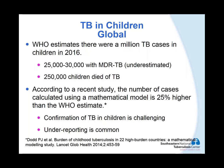Looking specifically at children, the WHO estimates that there were one million TB cases in children in 2016. Of these children, 20 to 30 thousand were MDR-TB cases, and 250 thousand children died of TB. Everybody agrees that this is probably an underestimation. According to a recent study using a mathematical model, the real number is probably 25 percent higher than what the WHO estimates. This is because WHO estimates are based on reported pediatric cases, and confirmation of TB cases in children is very difficult and challenging, so underreporting is extremely common.